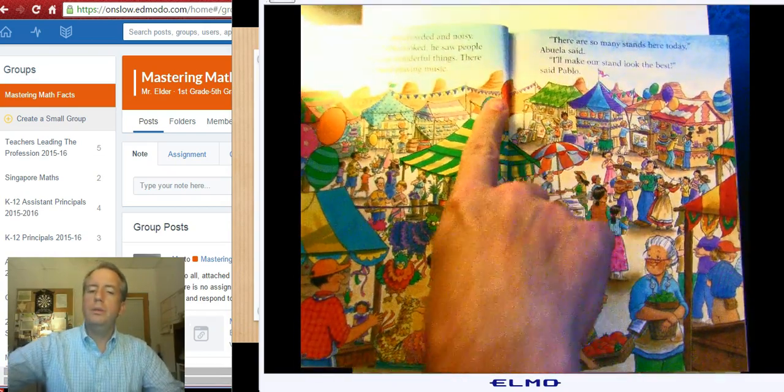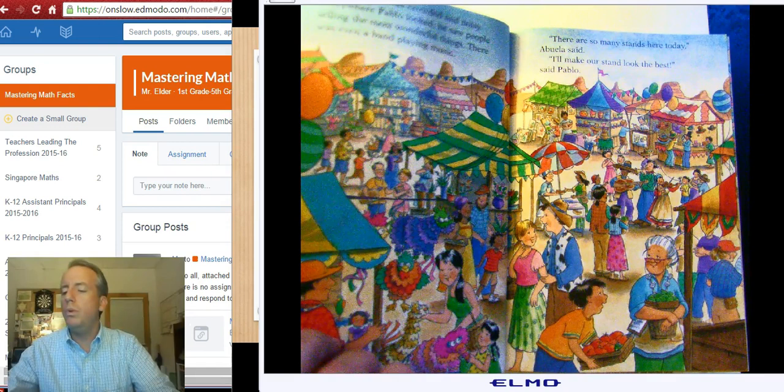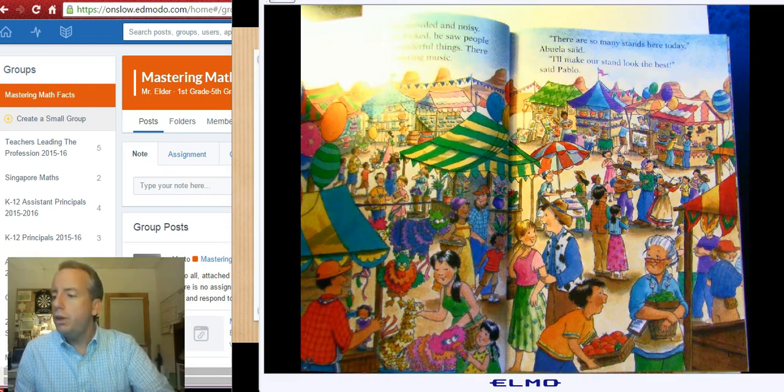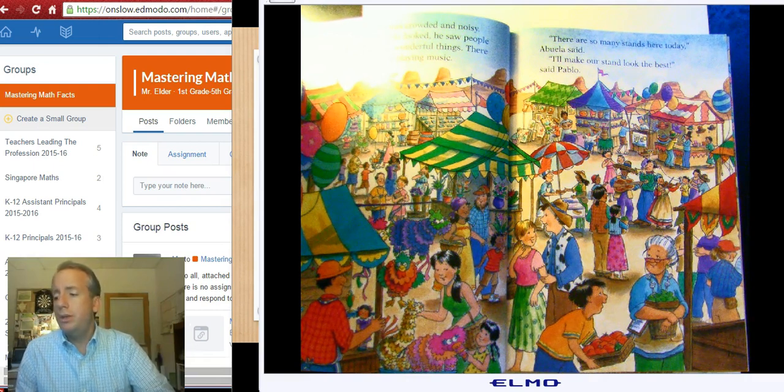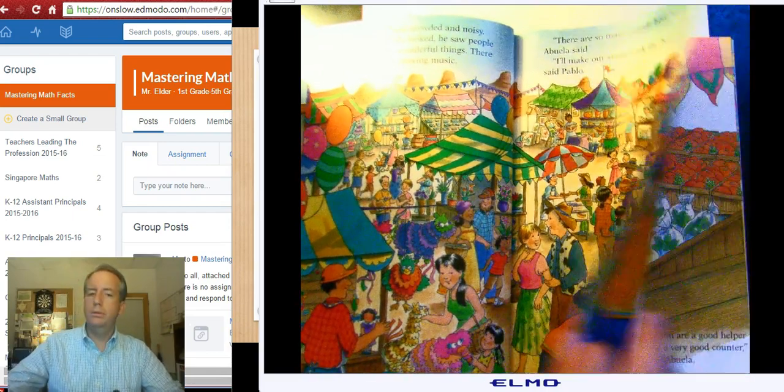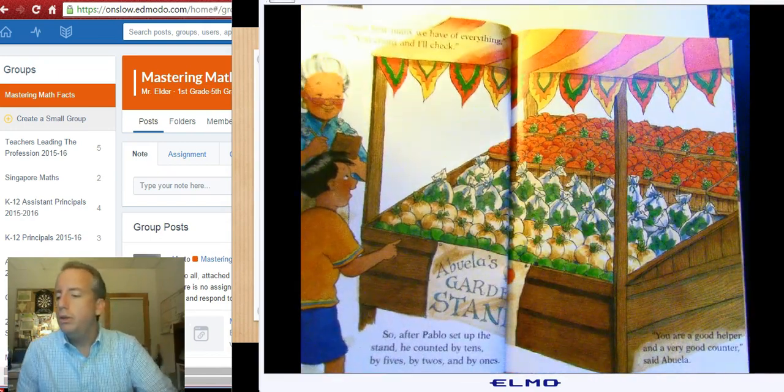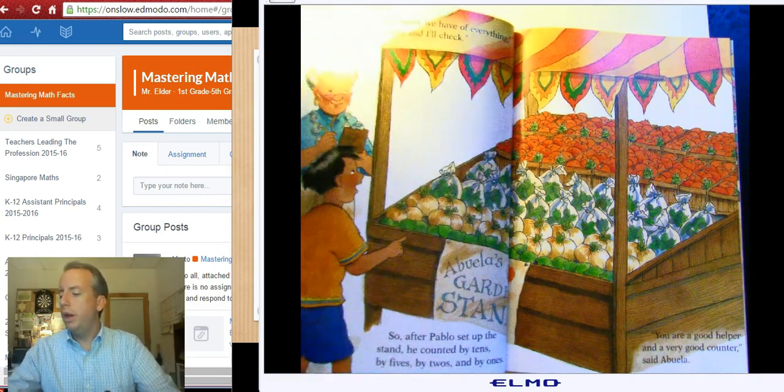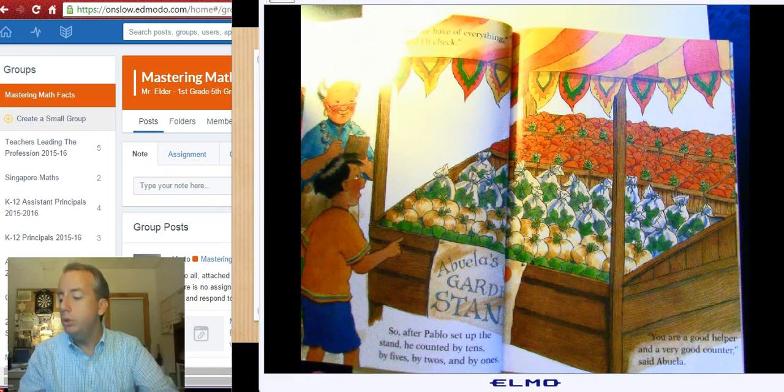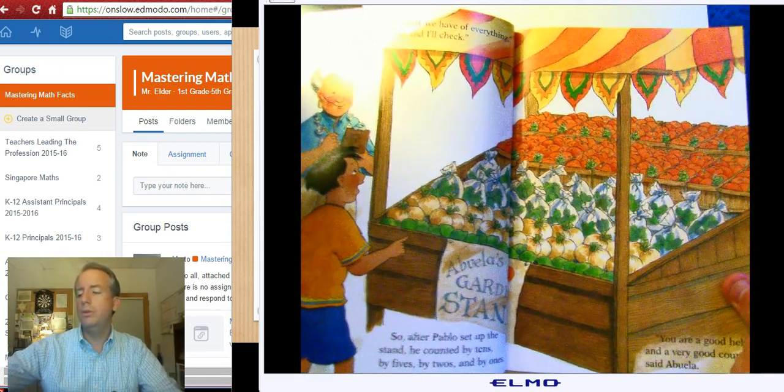The market was crowded and noisy. Everywhere Pablo looked, he saw people selling the most wonderful things. There was even a band playing music. There are so many stands here today, Abuela said. I'll make our stand look the best, said Pablo. Tell me again, how many of everything, said Abuela. You count and I'll check. So, after Pablo set up the stand, he counted by tens, by fives, by twos, and by ones. You're a very good helper and a very good counter, said Abuela.